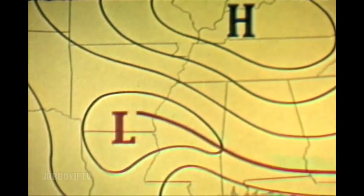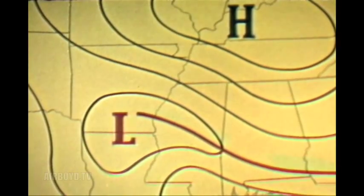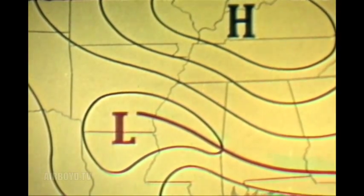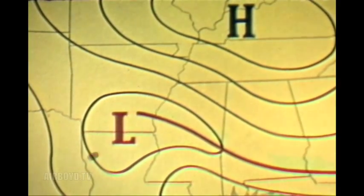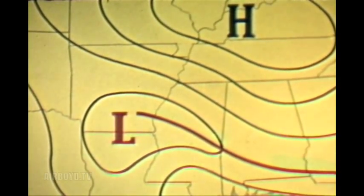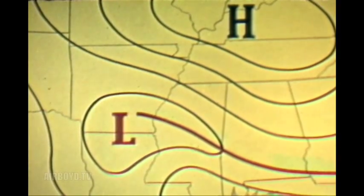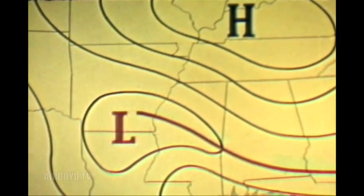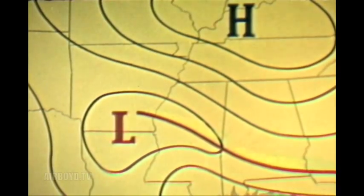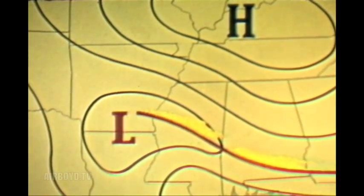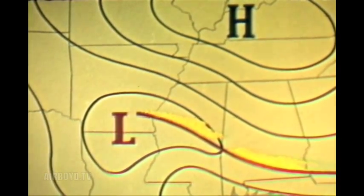Here's the surface map during summer showing a large dominating warm front. As before, we'll see the weather produced again using the appropriate symbols. Immediately along the front, there is fog and low clouds, or scud.